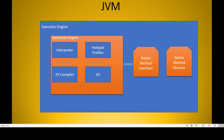The hotspot profiler monitors how execution is going on. If some set of statements are being executed repeatedly, the hotspot profiler detects it and helps the JIT compiler kick in to speed up execution. The garbage collector is responsible for cleaning up unused objects in memory areas. If unused objects are present in the heap area, they will be cleaned up periodically — that is the purpose of garbage collection.